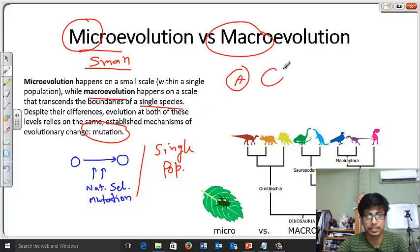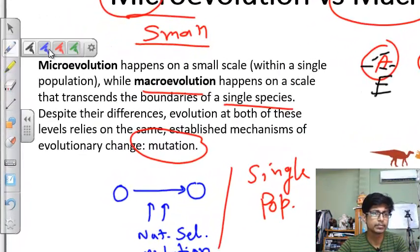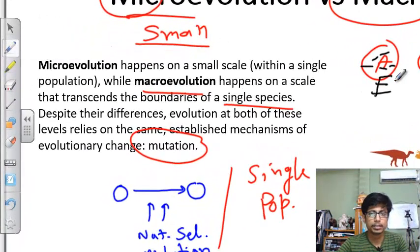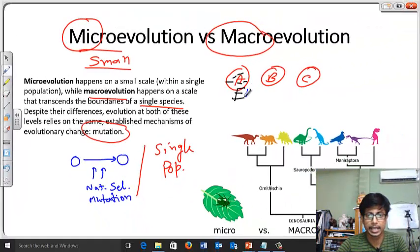This is a population of species A, this is a population of species B, population of species C. Microevolution will be called if the evolution takes place here in species A, this is microevolution. If the evolution took place between population A as well as B as well as C together due to certain change, we call it a macroevolution.